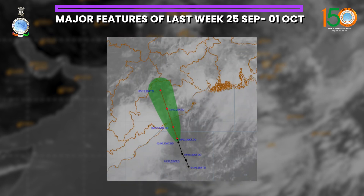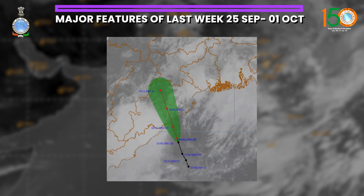Now we will see the system over the Bay of Bengal. The image you are seeing is a satellite imagery with the track of the system superimposed on top. Initially a low pressure area formed over west central Bay of Bengal on 30th September, concentrated into a well-marked low pressure area over the same region on 1st October, then moving north-northwestward it concentrated into a depression on 1st October, and further intensified into a deep depression over west central and adjoining northwest Bay of Bengal, persisting over the same region at 8:30 this morning, 2nd October.